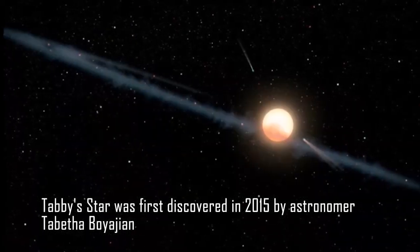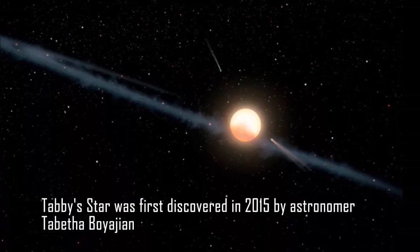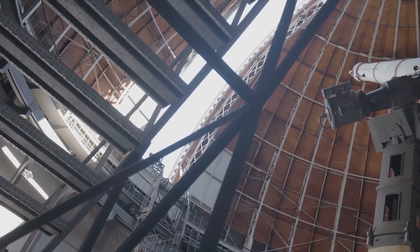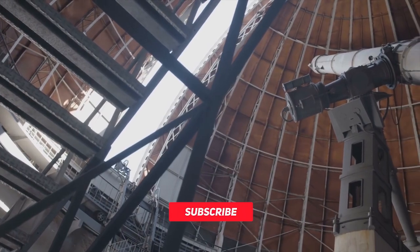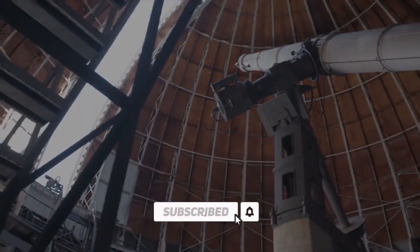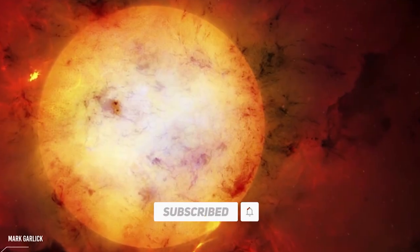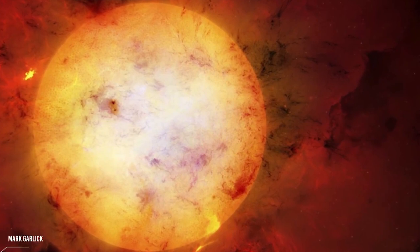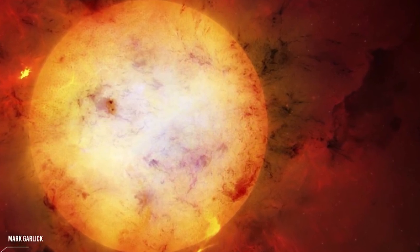Tabby's Star was first discovered in 2015 by astronomer Tabitha Boyajian and her team, who were using data collected by NASA's Kepler telescope. They noticed that the star's brightness was fluctuating in a strange and irregular pattern, unlike anything they had seen before.